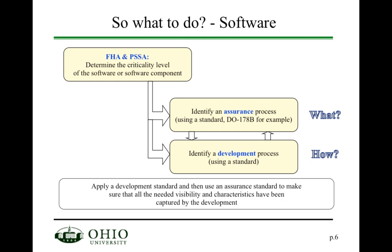If you look at the software portion of a system, you first establish the criticality of that software component during your functional hazard assessment and preliminary system safety assessment. Based on this criticality level, you use a standard like DO-178B or C to find out what you need to do to get a compliant product. It doesn't mean you won't make mistakes, but it uses a structured process to reduce the amount of faults introduced in the code to a hopefully acceptable level.